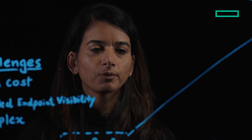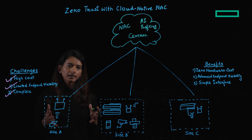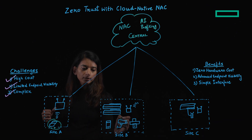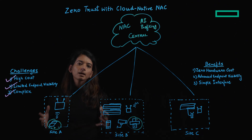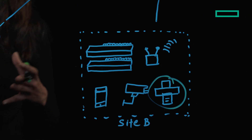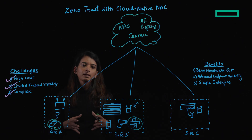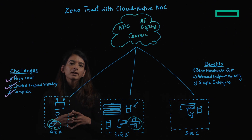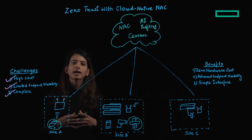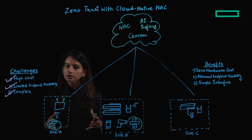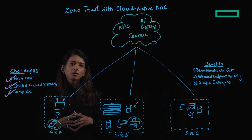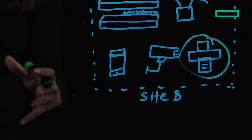Number one is profiling. Any device that connects to the network — whether that is a corporate laptop, an IoT sensor, a printer, or even a BYOD device — the AI profiling engine as part of Central kicks in and starts profiling that device. It analyzes the device with a rich set of attributes depending on the device type, operating system, location, or even attributes from third-party UEM integrations.